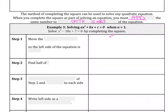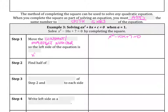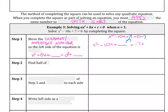Let's solve x squared minus 10x plus 7 equals 0 by completing the square. The first thing we do is move the constant — the imperfect number. The left side of the equation is set up as x squared plus bx plus blank equals d plus blank. So we subtract 7 from both sides and now we have x squared minus 10x plus blank equals negative 7 plus blank.